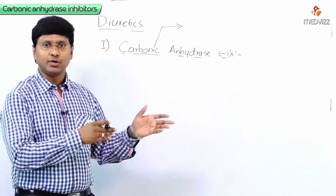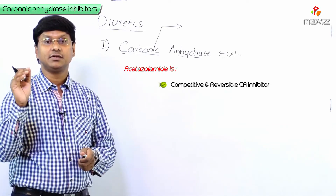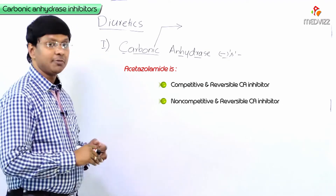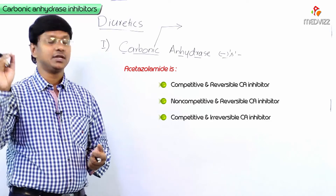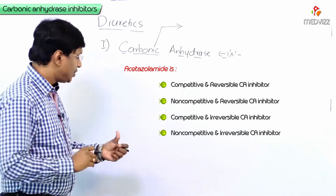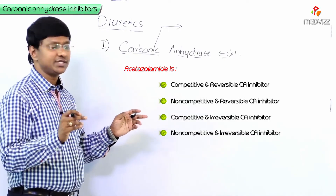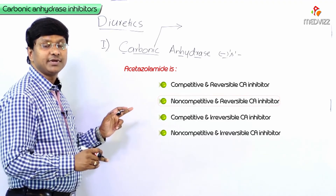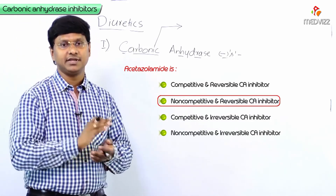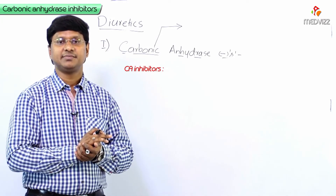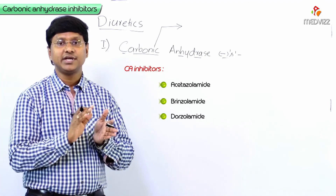Returning to our earlier question: acetazolamide is a non-competitive and reversible carbonic anhydrase inhibitor — that is the correct answer. It acts by non-competitive but reversible inhibition of the enzyme. Examples of carbonic anhydrase inhibitors include acetazolamide, brinzolamide, and dorzolamide. These are classified as weak diuretics.